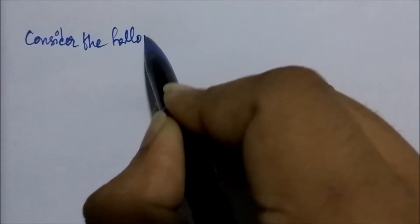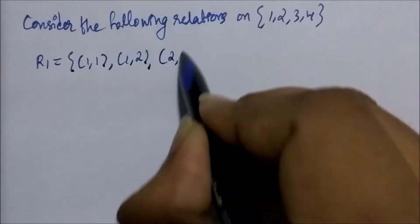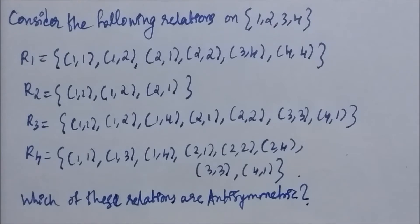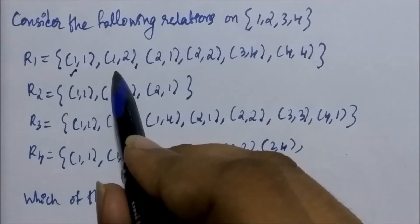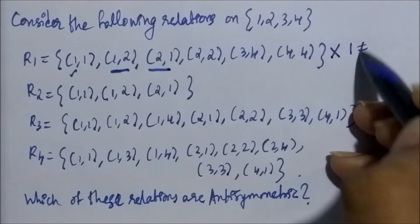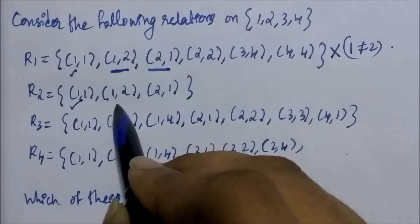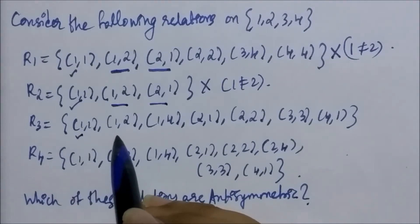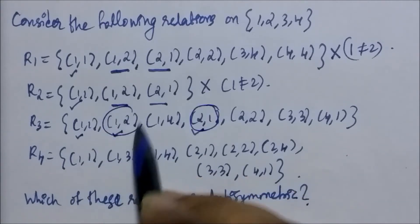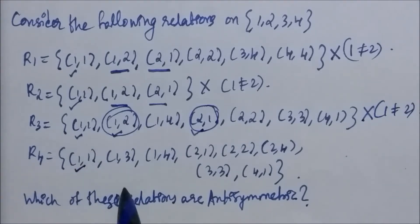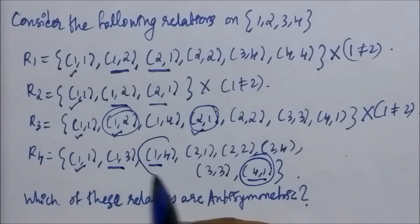Consider the following relations on set {1, 2, 3, 4} — R1, R2, R3, and R4. R1 is not antisymmetric because (1,2) and (2,1) are both present but 1 ≠ 2. R2 is not antisymmetric because (1,2) and (2,1) are present but 1 ≠ 2. R3 is not antisymmetric because (1,2) and (2,1) are both present and 1 ≠ 2. R4 is not antisymmetric because (1,4) and (4,1) are both present but 1 ≠ 4.